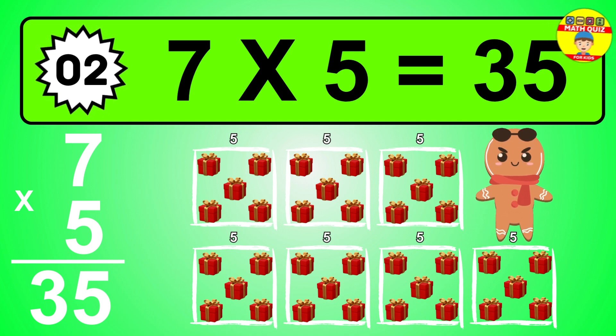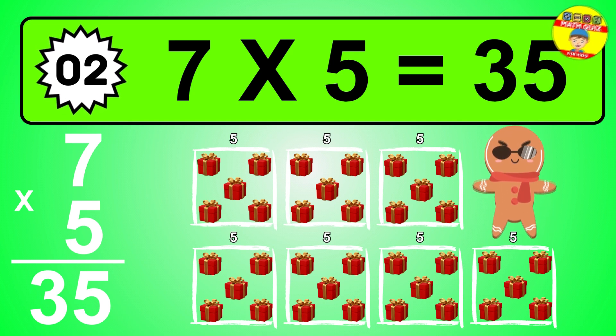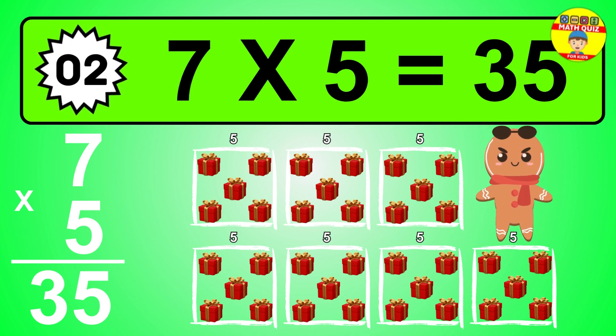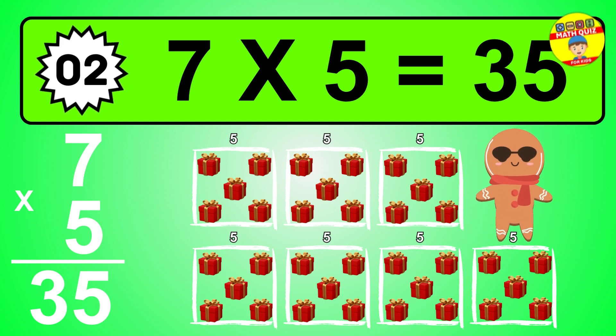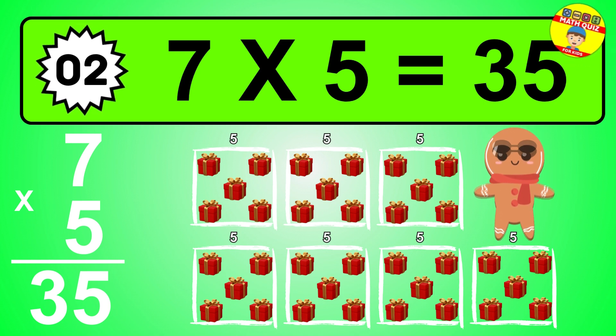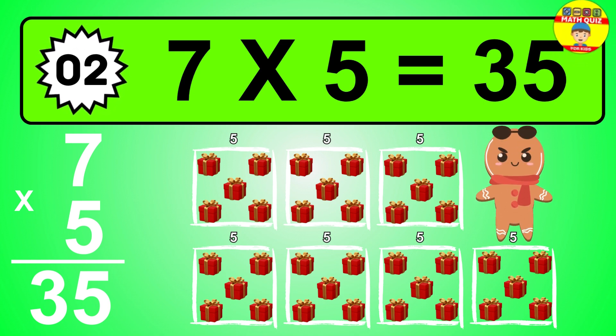To calculate, we have seven groups with five balls each one. So how many balls do we have? Thirty-five balls.